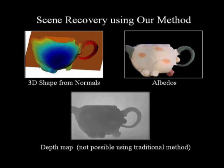Now we show the results of applying our algorithm to these images. The computed 3D shape is visually accurate and the scattering effects have been removed from the albedo map. In addition to surface normals and albedos, our method also yields the depth map of the scene, which is not possible using traditional photometric stereo.